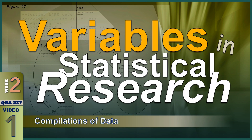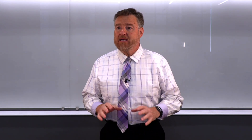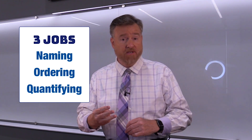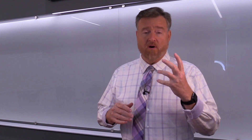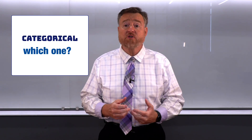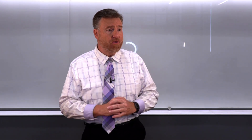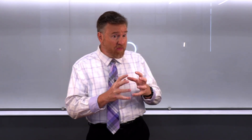Welcome back to week two of basic business statistics. We spent a lot of time last week talking about numbers, focusing on those numbers mostly in individual ways. We learned that numbers can do one of three jobs, about the levels of measurement, and whether those numbers were categorical or quantitative — answering questions like 'which one' or 'how many and how much.' This week we look at what happens when we get a lot of numbers together and they start working with one another.